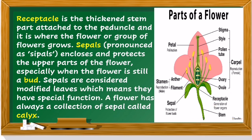These are the parts of a flower: the petal, the stigma, the style, the pollen tube, the ovary, the ovule, the receptacle, the stem, the sepal, the stamen, the anther, and the filament. We will discuss all of these later on.